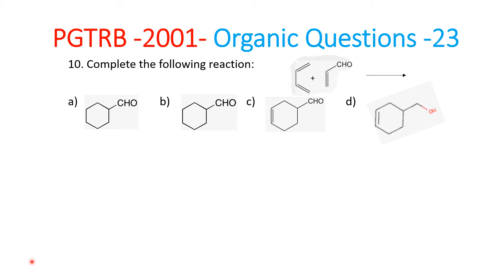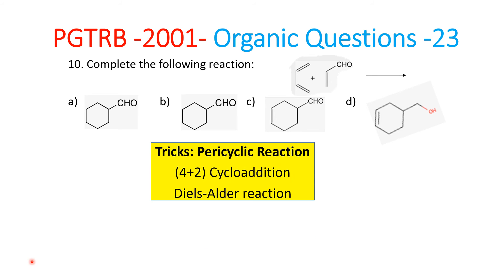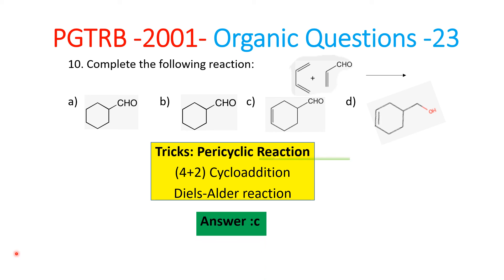Other than that, what we need to know is that this is a pericyclic reaction. This is a 4 plus 2 cycloaddition. This is an example of the Diels-Alder reaction. The answer is C.